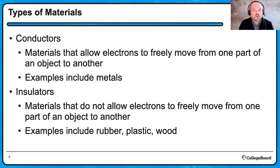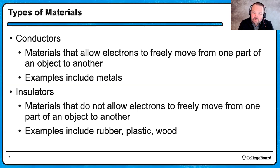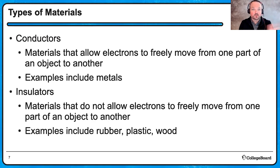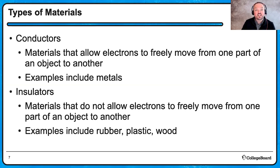We need to make sure we talk about different types of materials and what charge — specifically electrons — can do in that material. Conductors are materials that allow electrons to freely move from one part of an object to another. In AP Physics 2, metal is often synonymous with conductor. Similarly, an insulator is a material that does not allow electrons to move freely. In AP Physics 2, it's pretty much one or the other — a conductor where electrons are free to move, or an insulator where there's zero movement of charge. We use rubber, plastic, or wood as synonyms for insulator.